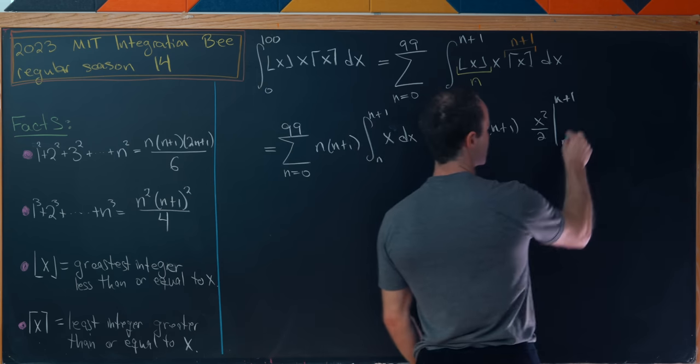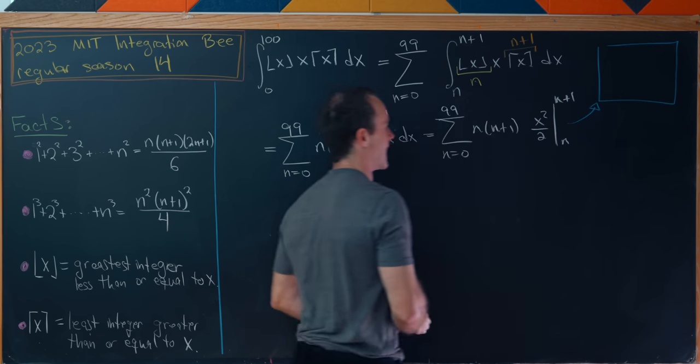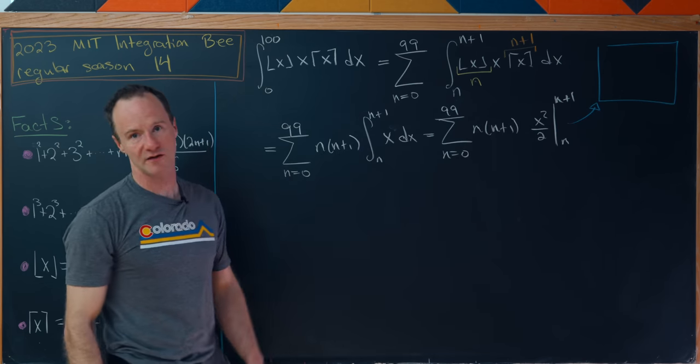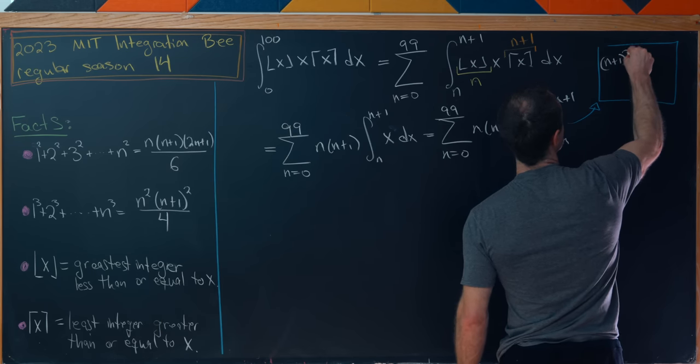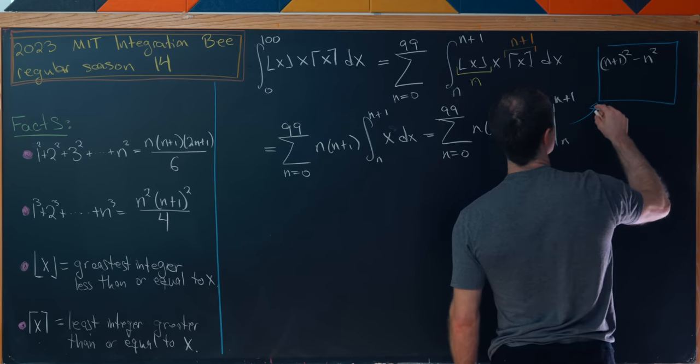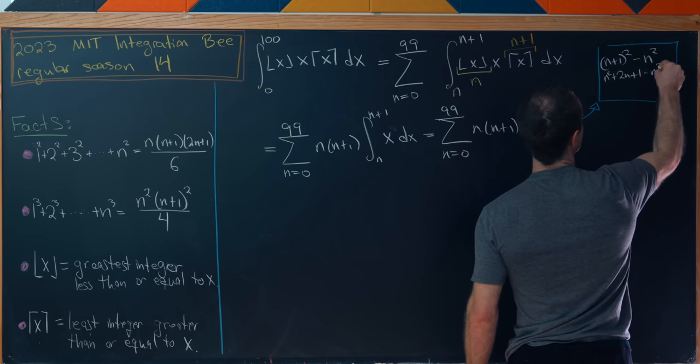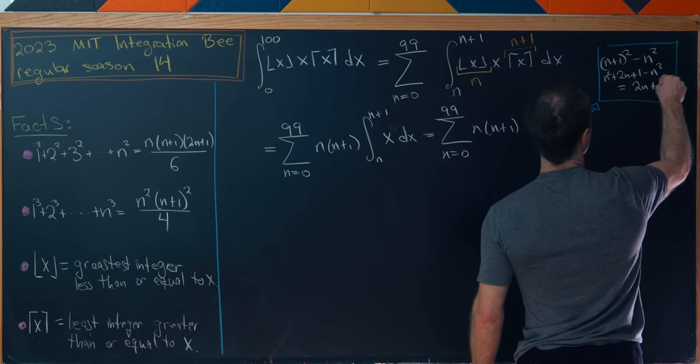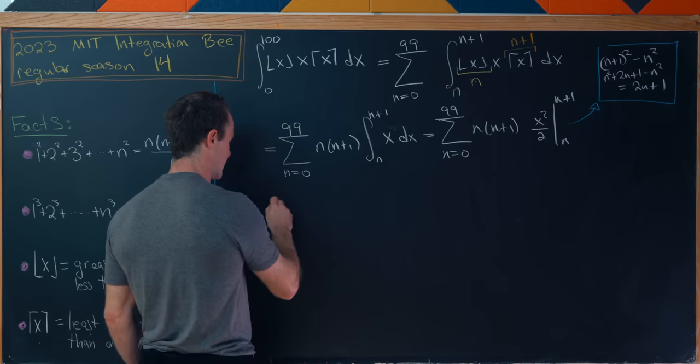And now let's do a side calculation to figure out that x squared evaluated at those two places. That will give us n plus 1 squared minus n squared which is n squared plus 2n plus 1 minus n squared which equals 2n plus 1.